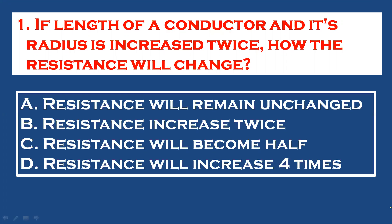Question 1: If the length of a conductor and its radius is increased twice, how will the resistance change? Resistance, length, and area are connected by the formula R = ρL/A. If the length and area are changing, it will not change the resistivity. As you can see here, length becomes 2L.